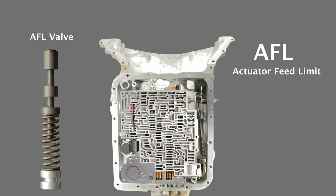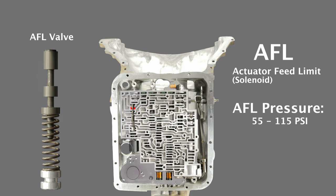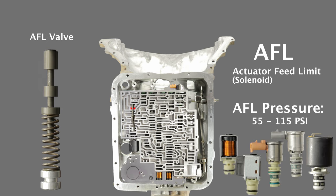AFL stands for actuator feed limit. Another name for an actuator is solenoid, so you could call this valve train the solenoid feed limit. The AFL valve is a simple valve train that acts like a mini pressure regulator valve. Line pressure is the highest operating hydraulic pressure within the automatic transmission. The AFL valve takes that high line pressure and regulates it down to a pressure anywhere from 55 to 115 psi. That lowered pressure is used to feed all but one of the solenoids on the 4L60E. In a future video, I'll cover solenoid operation and dedicate a video to how the AFL valve works.